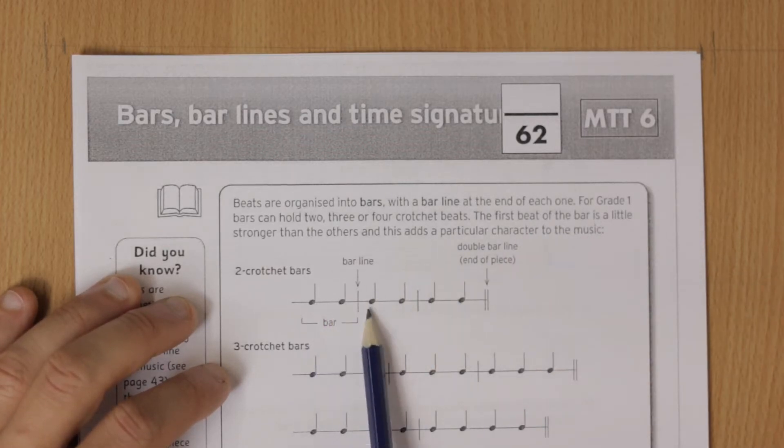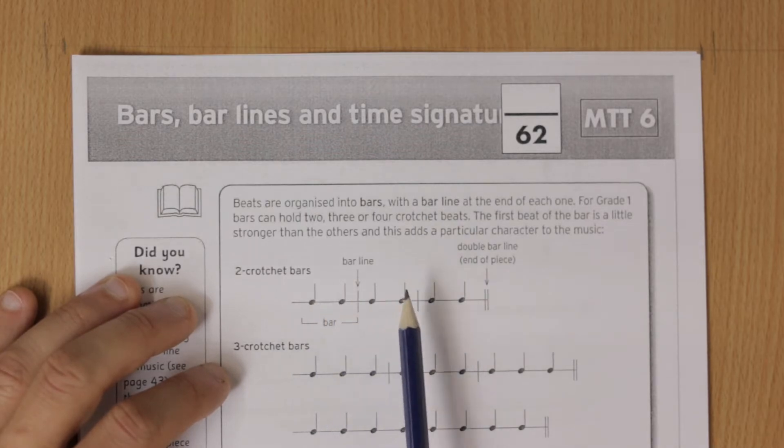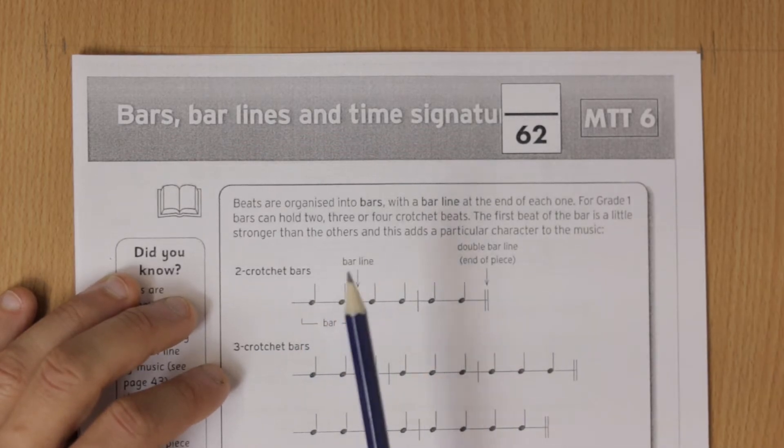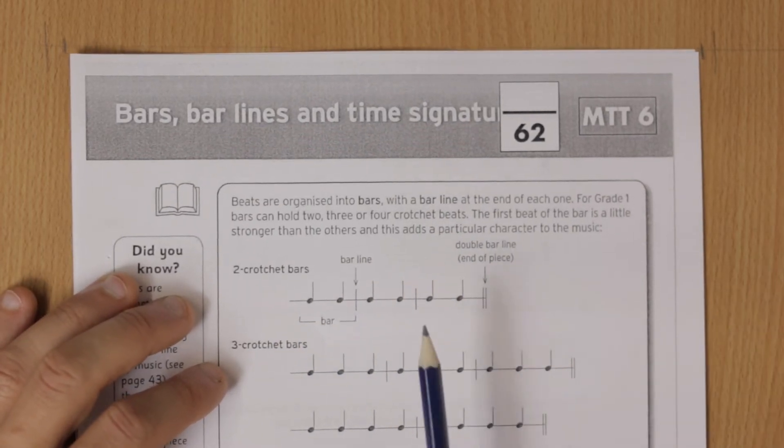In this one, we've got two crotchet beats in each bar and we count it one-two, one-two, one-two. Notice the first beat is stronger. That gives us a one-two, one-two, one-two.